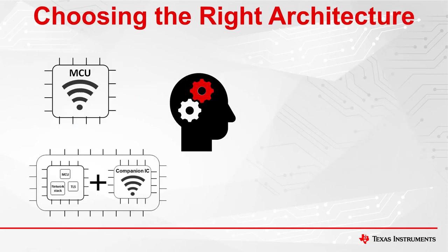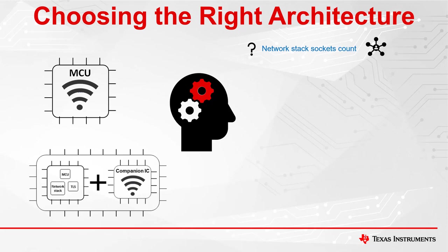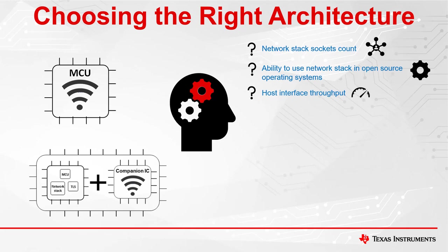There are additional factors to consider before choosing the most appropriate architecture. First, are there any requirement limitations or considerations that negate a specific architecture? For example, can the internal network stack of a wireless MCU support enough sockets for the application? From the software aspect, what ability is there to use networking stacks in open source operating systems like Linux? Or is the host processor interface robust enough to meet the required throughput? Does the host processor contain enough memory and processing power?